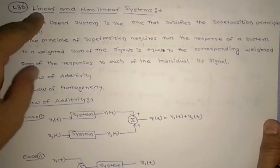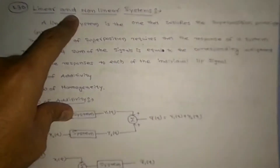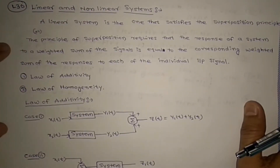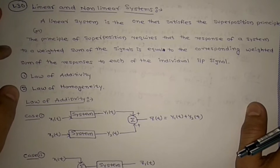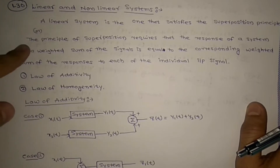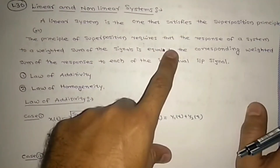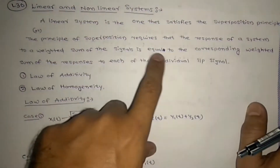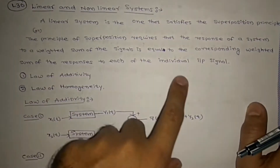Welcome to my 30th lecture on linear and non-linear systems. A linear system is one that satisfies the superposition principle. The superposition principle means it needs to satisfy the law of additivity and the law of homogeneity. The principle of superposition requires that the response of a system to a weighted sum of signals is equal to the corresponding weighted sum of the responses to each of the individual input signals.